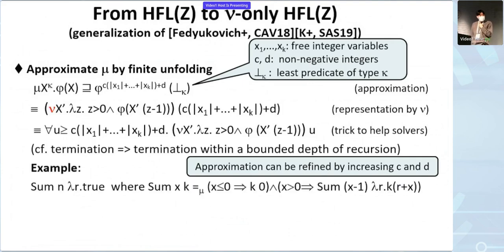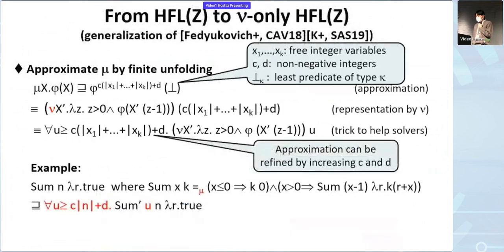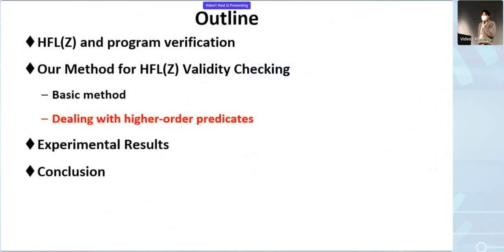As an example, the formula capturing termination of the sum function has a predicate defined by a least fixed-point operator. Using this method, we can under-approximate it with a greatest fixed-point formula. In this case, it suffices to set c and d to one, and we can automatically prove that the right-hand side is valid, concluding that the original formula is valid — meaning the sum function terminates. However, in order to deal with higher-order predicates, we need a further twist.